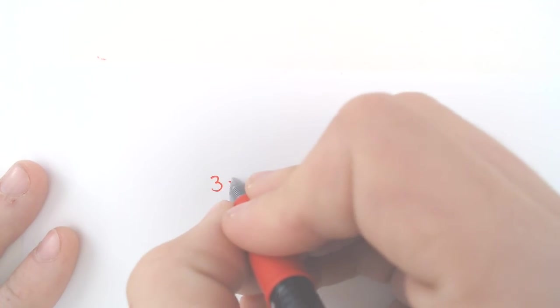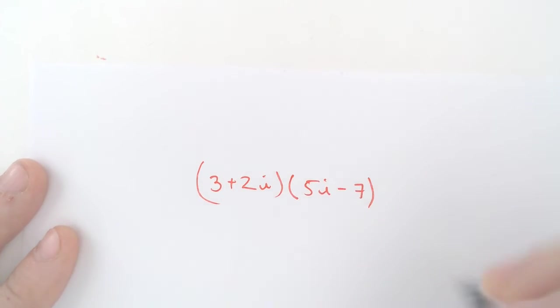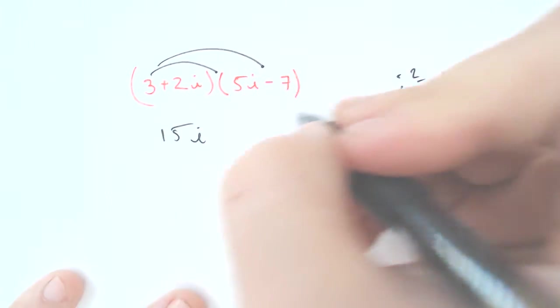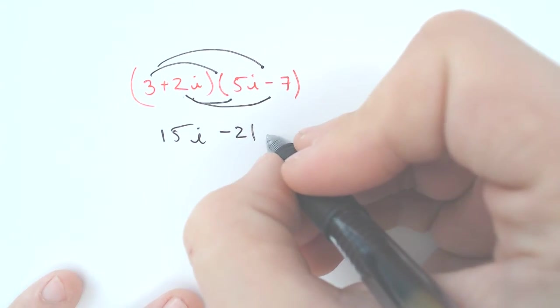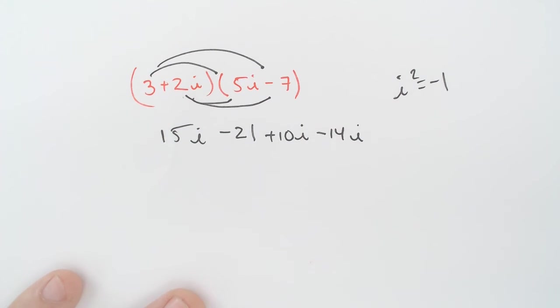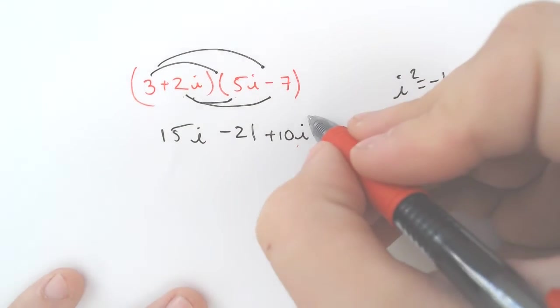Let's say you have 3 plus 2i, and you need to multiply by 5i minus 7. So this is just taking an imaginary complex number and multiplying it. And the only thing you really have to know how to do here is FOIL, which is distribute, and know that i squared, make sure you know this, write it down, i squared is equal to negative 1. So we're going to distribute the 3. We got 15i minus 21. We're going to then distribute the 2i, which would make plus 10i minus 14i.